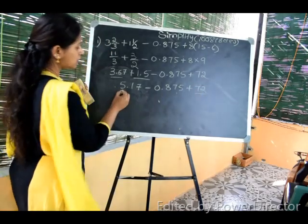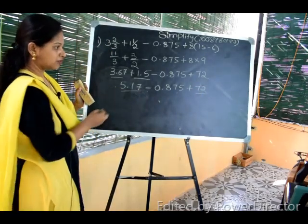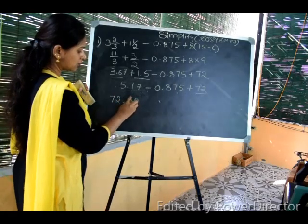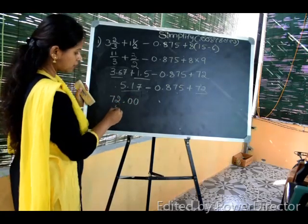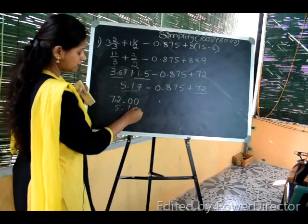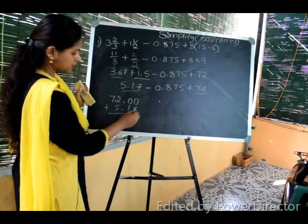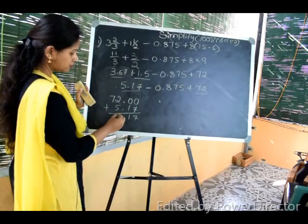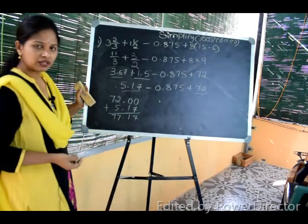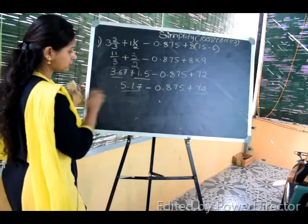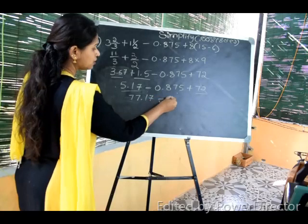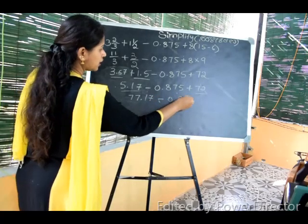5.17 minus 0.875 plus 72. Now, this is 72 plus 5.17. First we add this. 72.00. Now we add this. 5 plus 2 is 67. 77.17.